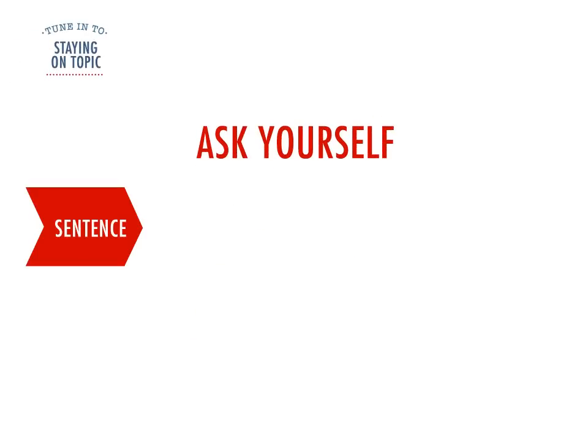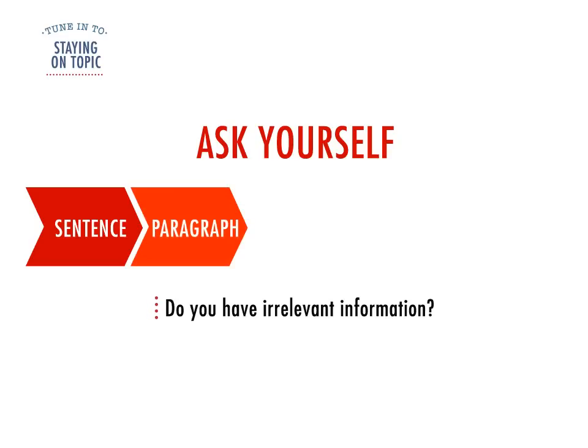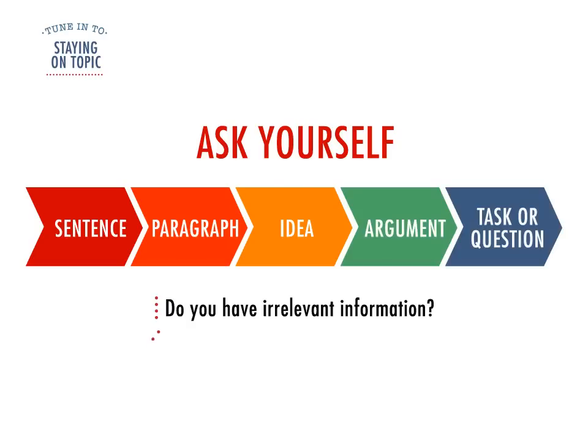As you're writing, ask yourself a few questions to check that you are still on topic. Does each sentence relate to the point of the paragraph? If some information doesn't match, then it should be either in a different paragraph or taken out altogether. Don't give the markers irrelevant information. Also, ask yourself if each paragraph relates to the key idea and if that idea links to your argument.